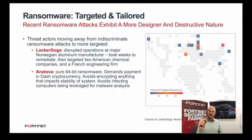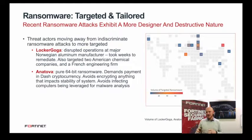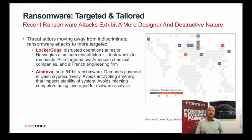LockerGoga is one example focusing on critical infrastructure with more targeted attacks. What was concerning about LockerGoga is that there was not much special about it — it was just common malware without many evasion techniques in the analyzed samples. Most ransomware uses obfuscation to avoid detection, but this one didn't. It appears the actors may have done reconnaissance, reviewed the security controls in place, and determined those controls would not detect the ransomware, so there was no need to go the extra mile.